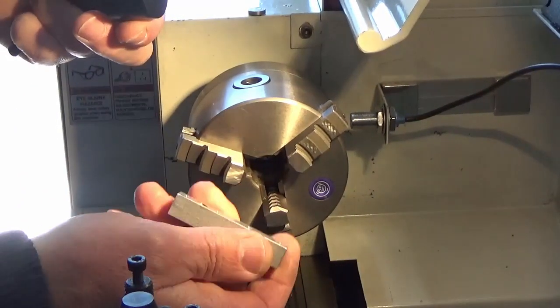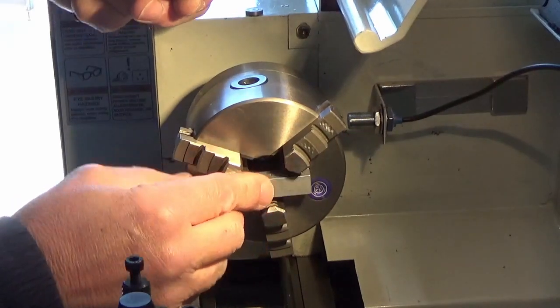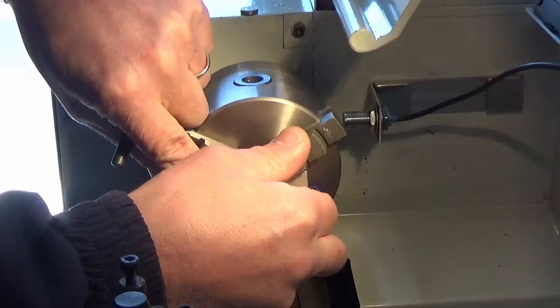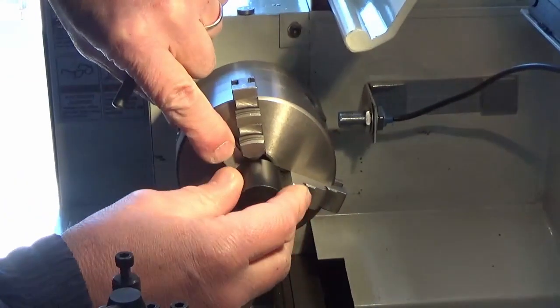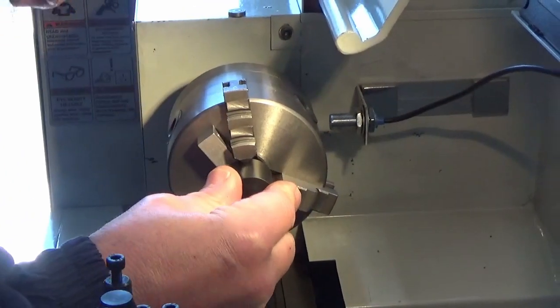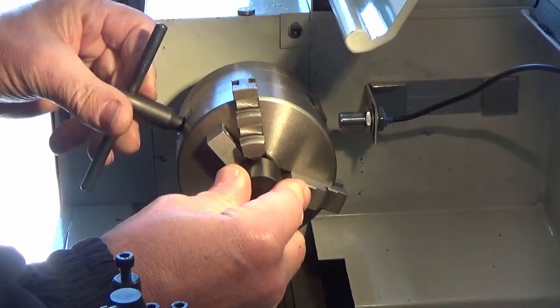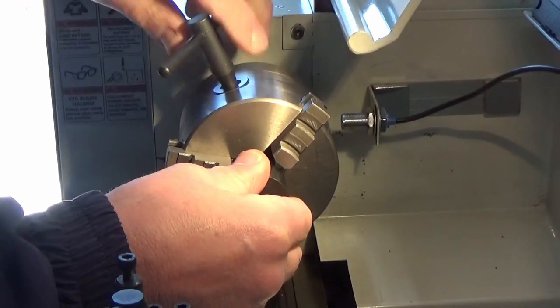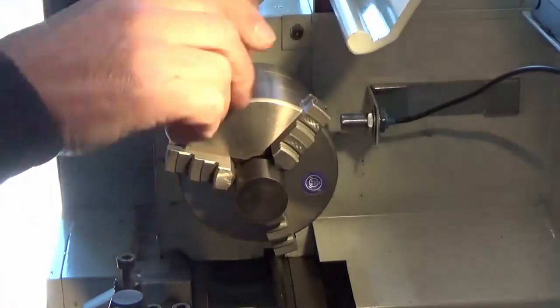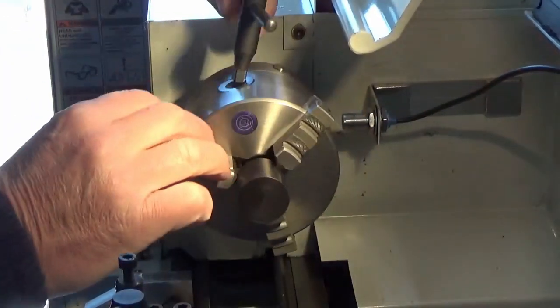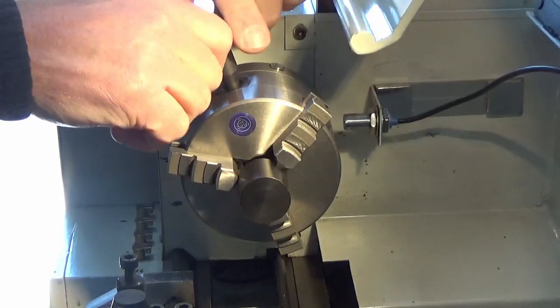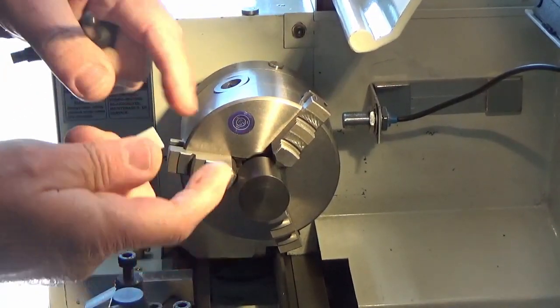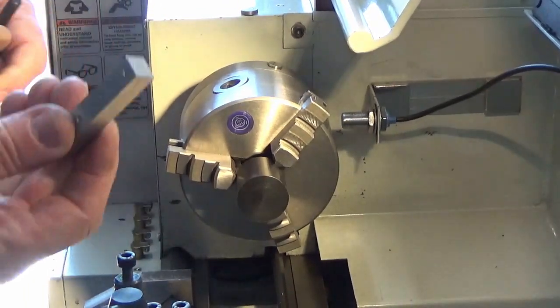Alright, so what we're going to do is put a spacer block in. This is just a piece of machined aluminium which we're using as our spacer out from the face of the chuck. We tighten that up. That's just giving us a consistent spacing behind the block that we're going to be machining.